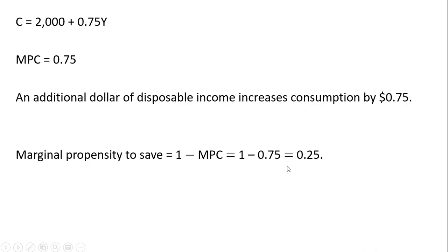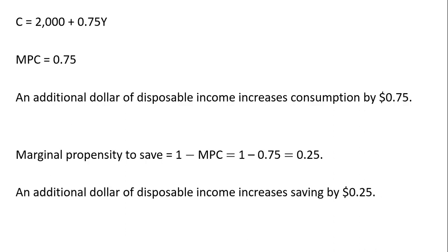An additional dollar of disposable income means that saving will increase by 25 cents. You'll notice that the marginal propensity to save plus the marginal propensity to consume must sum to 1 — 0.75 plus 0.25 sums to 1.